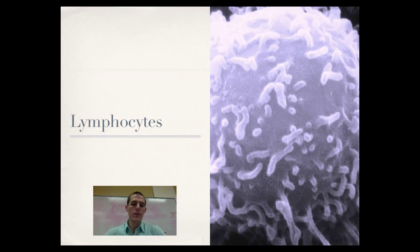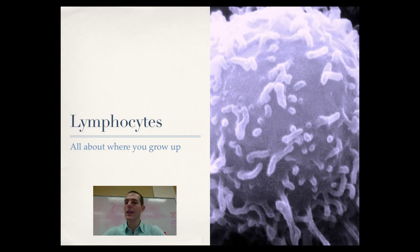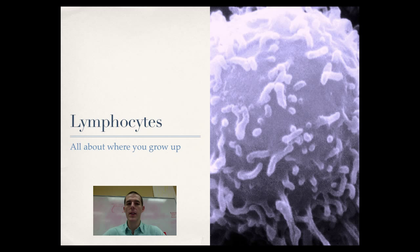The first thing we need to talk about is the general idea of a lymphocyte. A white blood cell is also known as a lymphocyte, and T cells and B cells are also known as lymphocytes. So lymphocyte is a general term for many things, as is white blood cell.